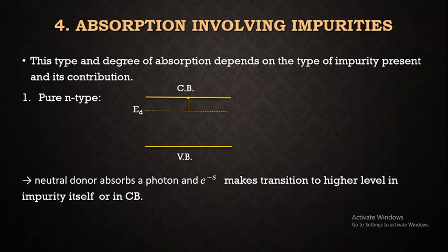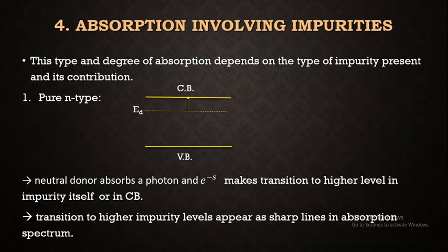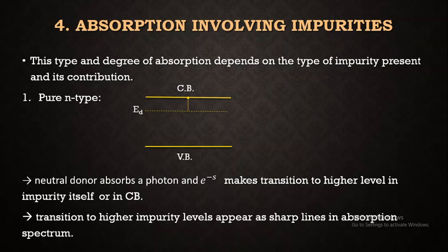The donor impurities present at level ED can make a transition to a higher level within the impurity level itself — something like an intraband transition — or the electron in the donor level can ionize into the conduction band. These two possibilities can take place, and transitions to higher impurity levels appear as sharp lines in the absorption spectrum, which is the graph of absorption coefficient as a function of energy.